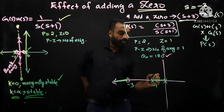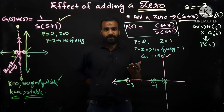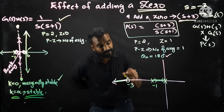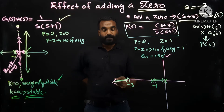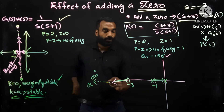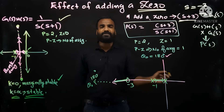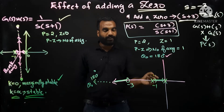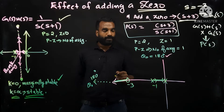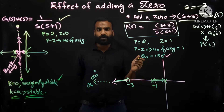We know root locus branches start from each pole. One pole needs to travel to the one zero at s=-3. But the other pole has no finite zero, so it must travel to infinity along the asymptote at 180°. So two poles are there and one zero is there — one pole finds its zero at s=-3, and the other pole travels to infinity in the negative real direction.